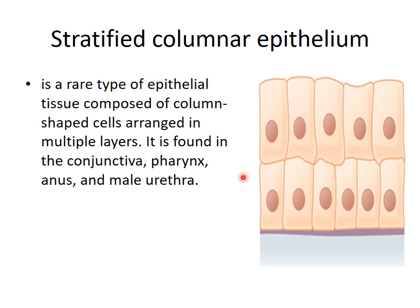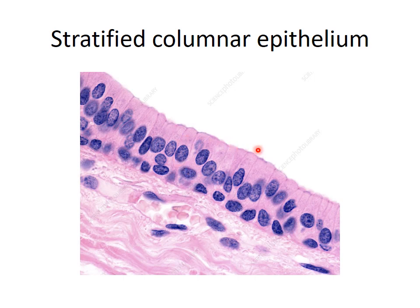The stratified columnar epithelium is a rare type, composed of column-shaped cells arranged in multiple layers. It is found in the conjunctiva, pharynx, and male urethra. The basal layer consists of cuboidal to columnar cells and the surface layer is columnar, which is why we call it stratified columnar epithelium. A photomicrograph shows the columnar surface layer and the cuboidal basal layer clearly.